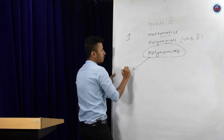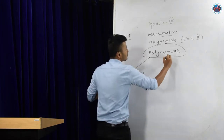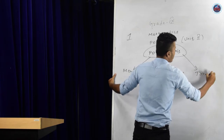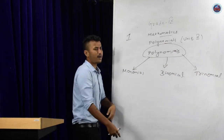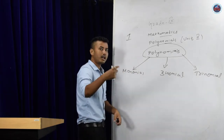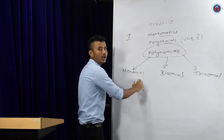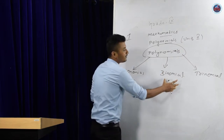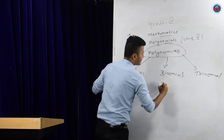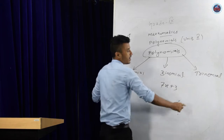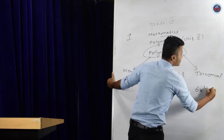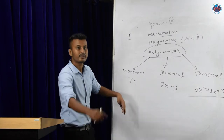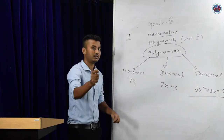Polynomials can be divided into three parts based on their number of terms. If the number of terms is 1, we call it a monomial — for example, 7x. If the number of terms is 2, we call it a binomial — for example, 7x plus 3. If the number of terms is 3, we call it a trinomial — for example, 6x squared plus 3x plus 4. This topic has already been covered in class 8.